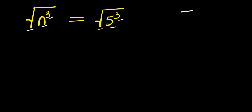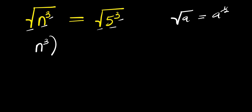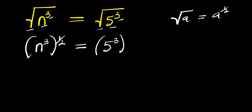Now, if you have square root of a, this equals a to the power 1 over 2. So square root of n power 3 will be n power 3 raised to the power 1 over 2, and this equals square root of 5 power 3, which will be 5 power 3 raised to the power 1 over 2.